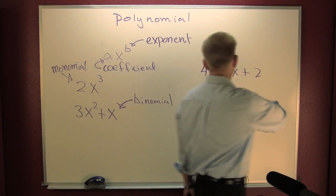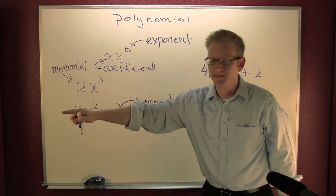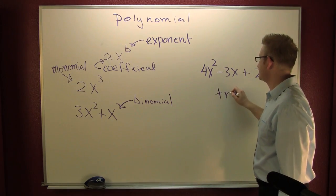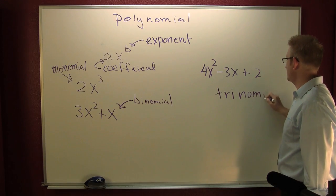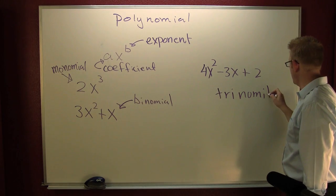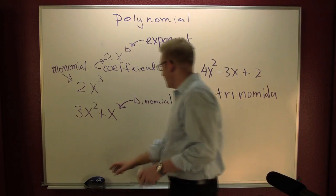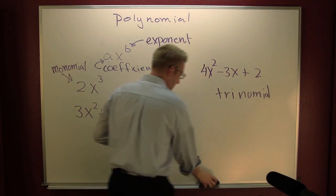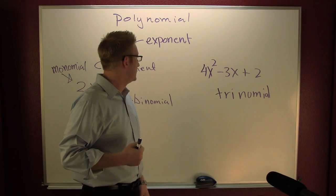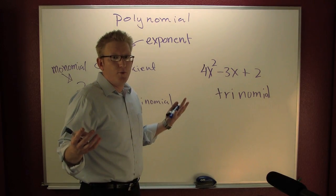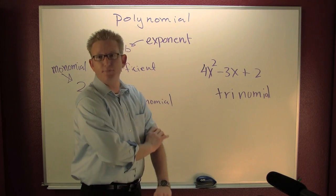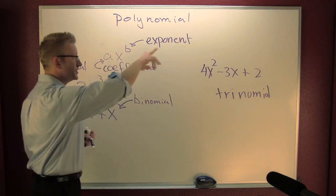What are we going to call a trinomial? A polynomial with three terms is called a trinomial. Think triceratops, or triangle, or trident. What do we call a polynomial with four terms? We call it a polynomial. Only the first three have special names: one term, two terms, and three terms.